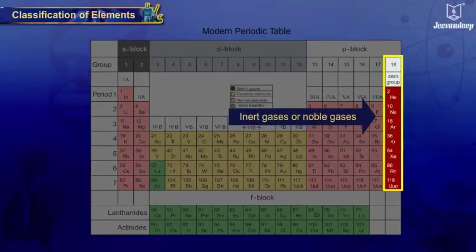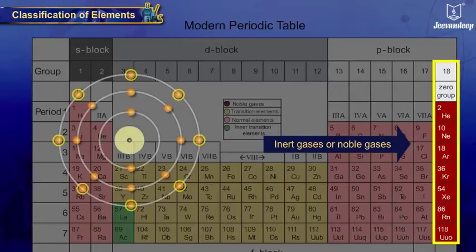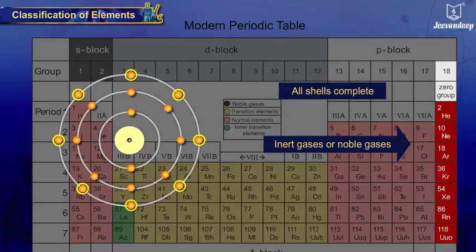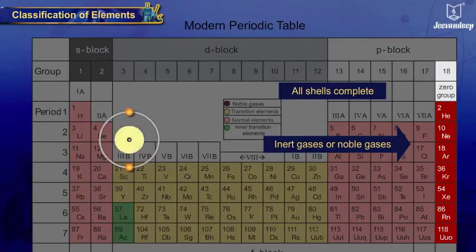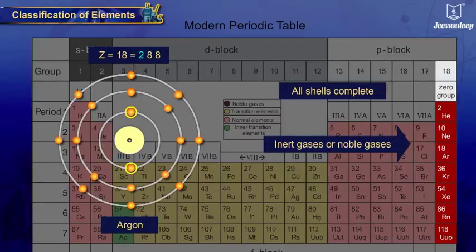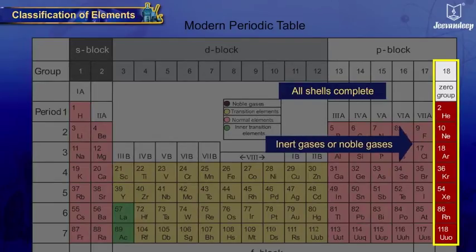First type: inert gases or noble gases. This includes the zero or 18th group. The elements belonging to this type have all shells completely filled — that is, the outermost shell has two electrons in the case of helium and eight electrons in the case of others. Example: for helium Z equals 2, for argon Z equals 18. This is the last column of the p-block, the 18th group, for inert or noble gases.